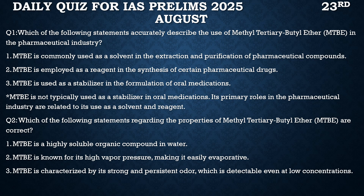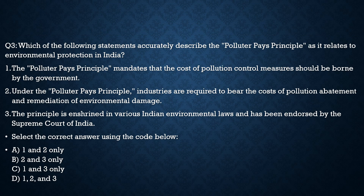Question 3: Which of the following statements accurately describe the Polluter Pays Principle as it relates to environmental protection in India? Statement 1 — the cost of pollution control should be borne by the government — totally incorrect. Statement 2 — industries are required to bear the costs of pollution abatement and remediation of environmental damage — 100% correct. Statement 3 — the principle is enshrined in various Indian environmental laws and has been endorsed by the Supreme Court of India — 100% correct. Correct answer: statements 2 and 3, option B.